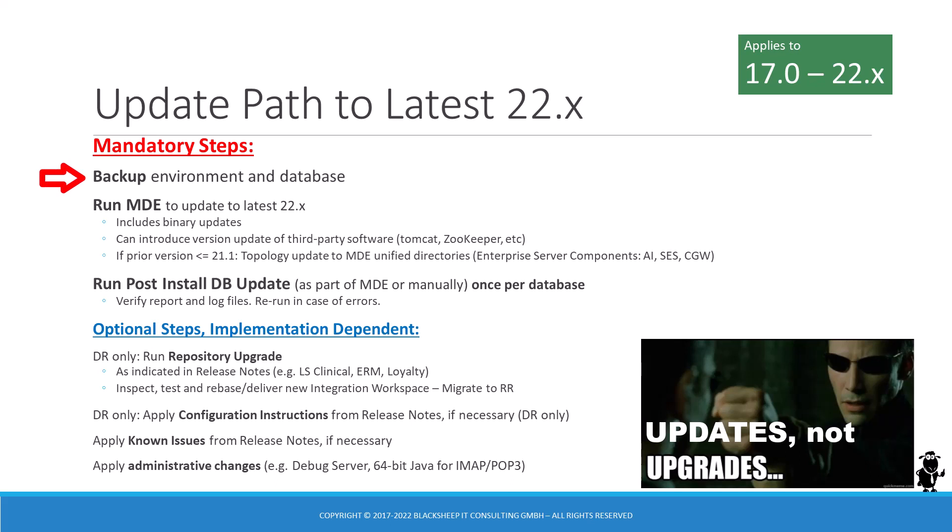First, it's highly recommended to make a backup of the entire environment and the database that you're intending to update. Then the Modular Deployment Engine needs to be run — it'll lay down the new files to disk. If your Siebel version is 21.1 or older, you'll also get a topology update to the MDE's Unified Directory structure. This applies to any Enterprise Server component such as AI, Siebel Server, or Gateway. It's also mandatory to run the Post-Install Database Update, which can be run automatically as part of the MDE or manually after the MDE is finished copying the binaries. This has to be executed once per database and applies schema changes and imports seed data and OpenUI manifest data into the target database. Make sure to check the Post-Install DB Update HTML report and the log files and re-run in case of errors before you continue.